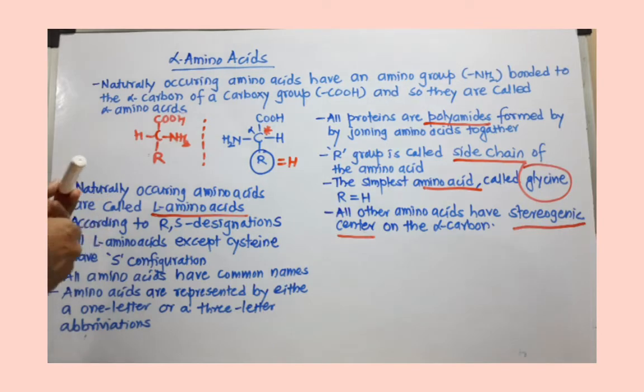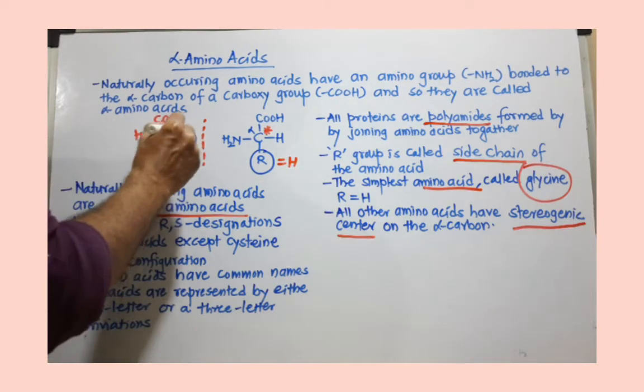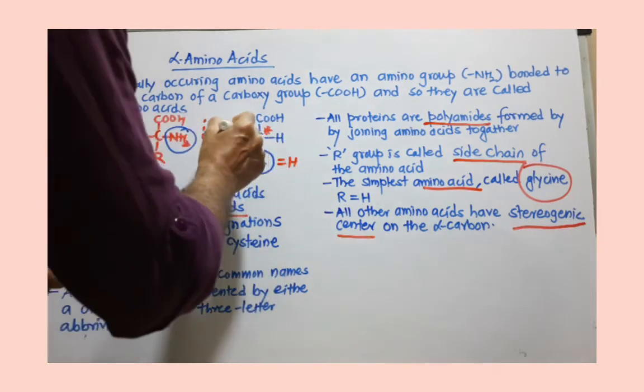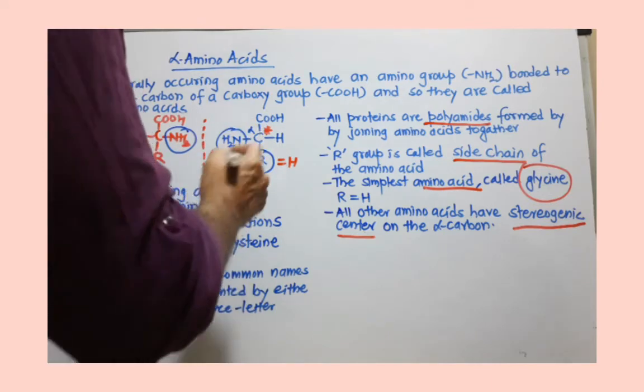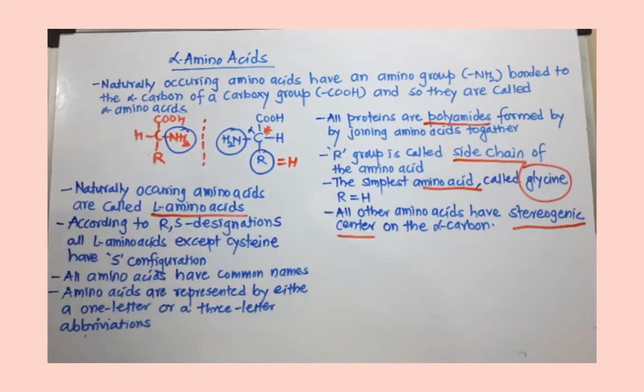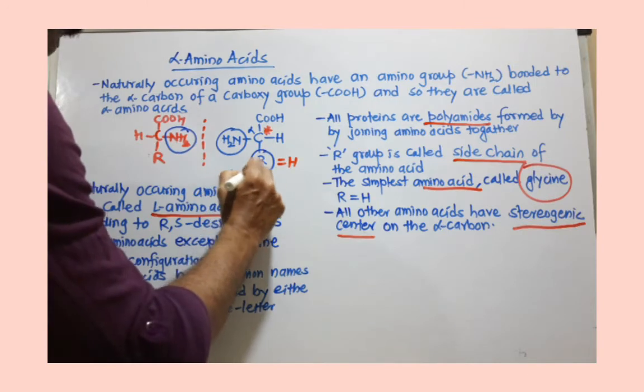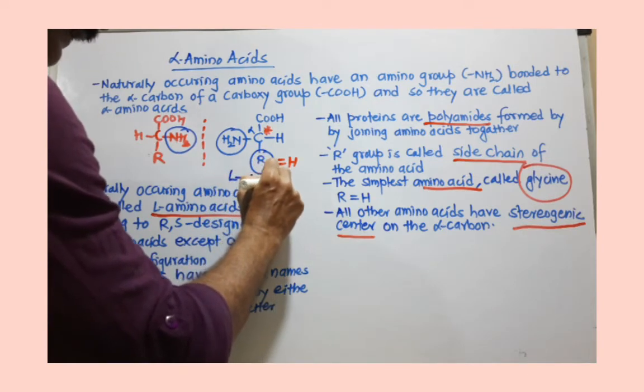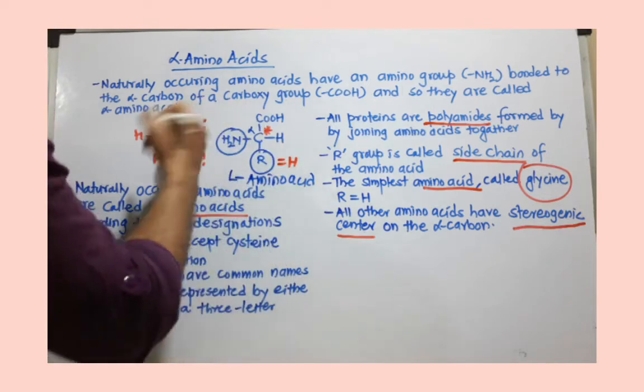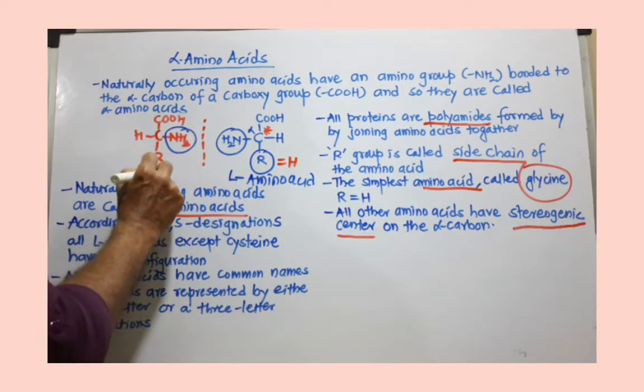In the mirror image, the NH2 group is toward the right-hand side, while in this molecule, the NH2 group is toward the left-hand side. When the NH2 group is toward the left, this is an L-amino acid. The enantiomer of an L-amino acid is a D-amino acid.